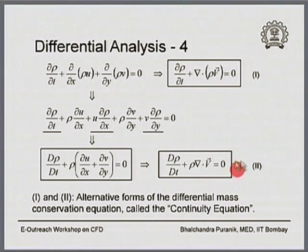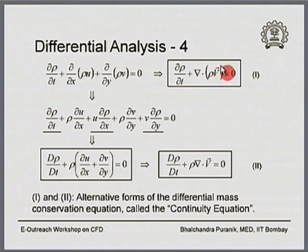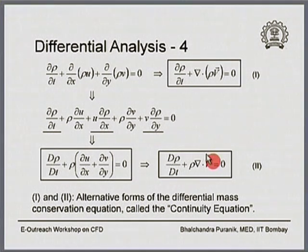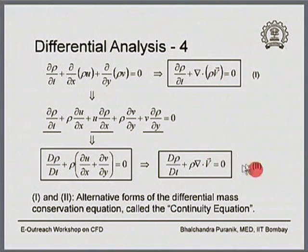Equations 1 and 2 are two equivalent alternative forms of the differential conservation of mass. Both can be derived from each other, and popularly either of these equations is called the continuity equation.